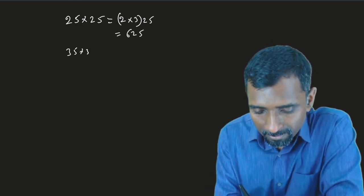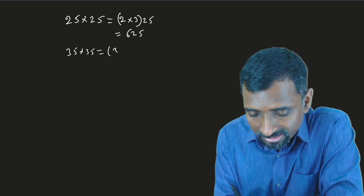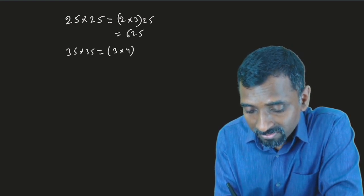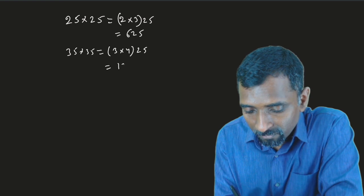If I say 35 multiply 35, we can say 3 multiply the next digit 4, then 25. It is 1225.